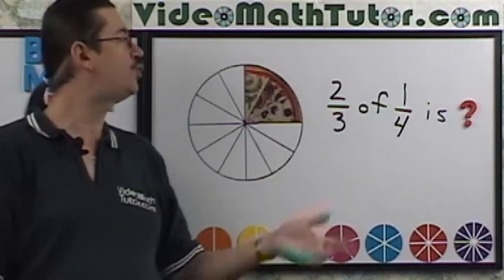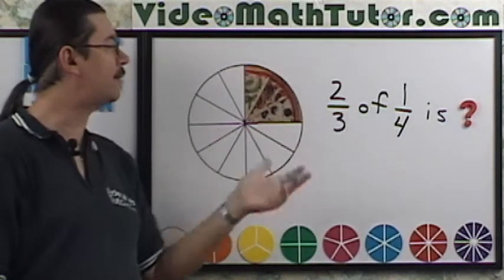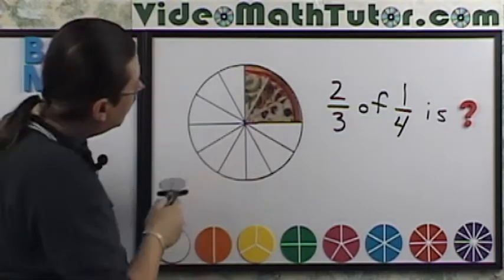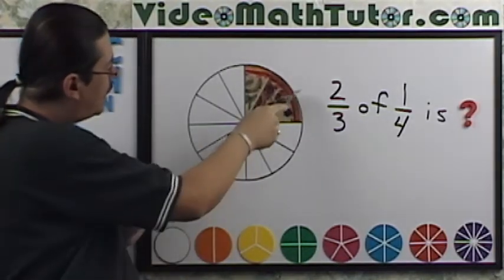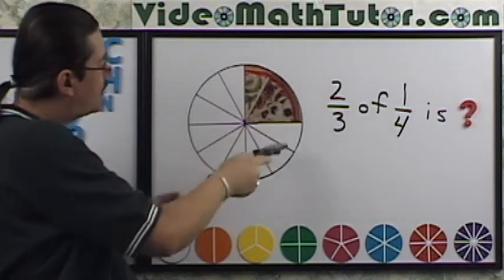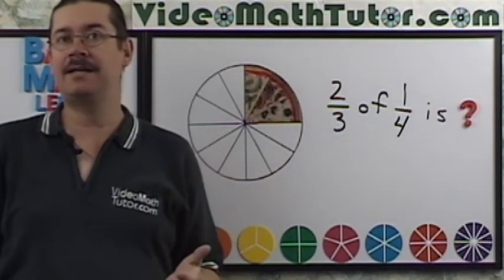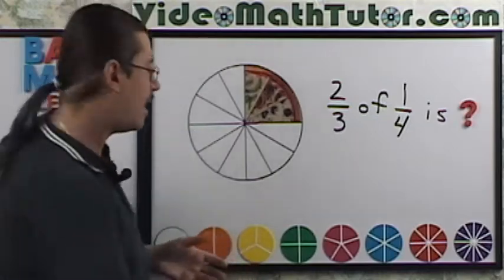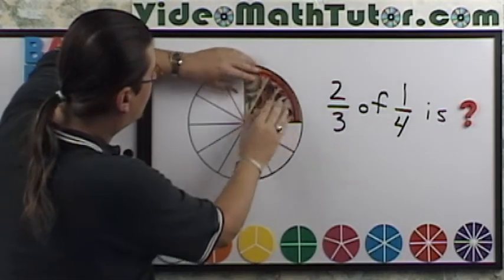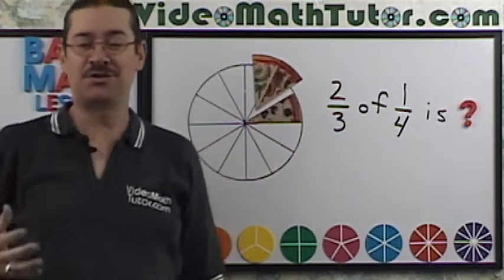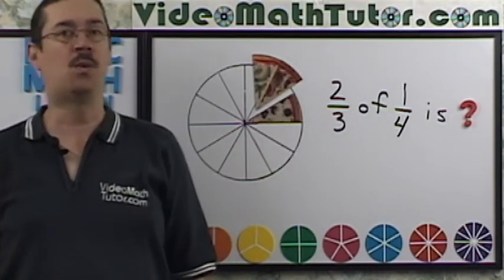Now I'd like to find out what is two thirds of a quarter. So if I slice it right there and notice if you extend the slices throughout this whole pizza here, you're really cutting it into twelfths and two thirds of this quarter. See that right there is really two twelfths, which is of course one sixth.